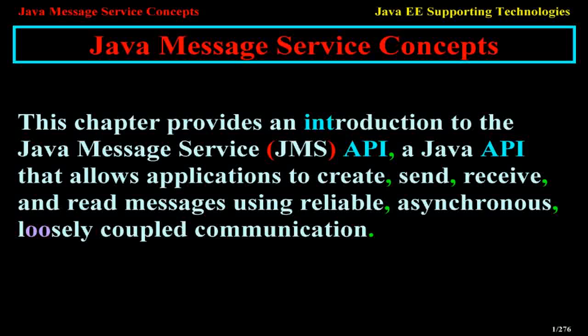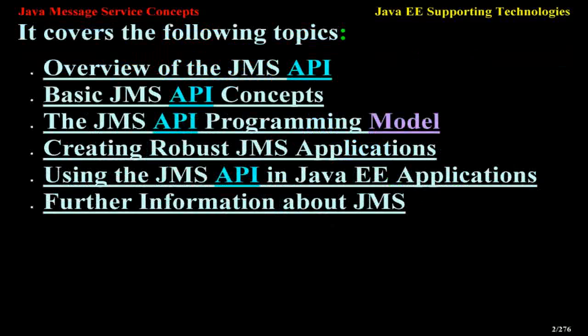Java Message Service Concepts. This chapter provides an introduction to the Java Message Service JMS API, a Java API that allows applications to create, send, receive, and read messages using reliable, asynchronous, loosely coupled communication. It covers the following topics: Overview of the JMS API, Basic JMS API Concepts, The JMS API Programming Model, Creating Robust JMS Applications, Using the JMS API in Java EE Applications, and Further Information About JMS.